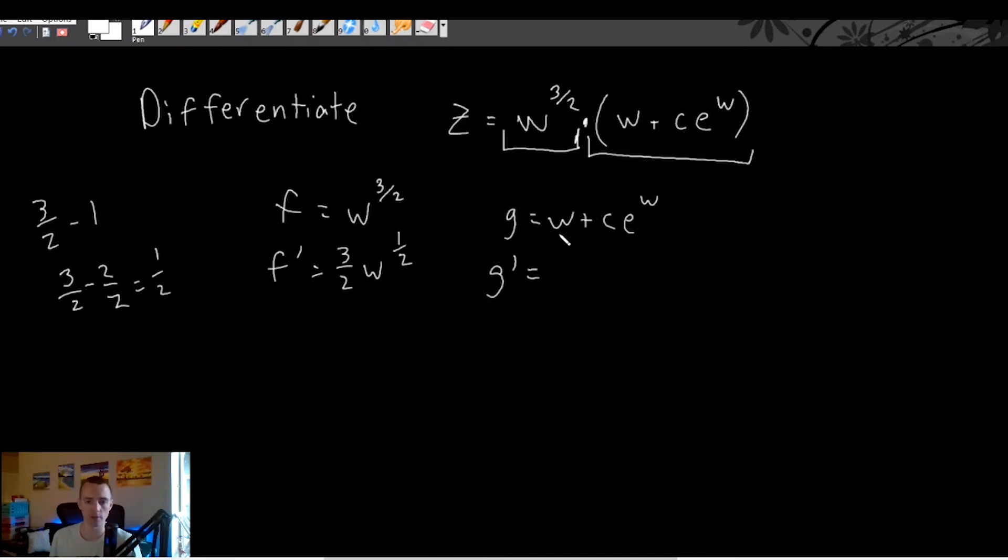And then the derivative of this, the derivative of w, the derivative of your variable by itself is always just going to be one.